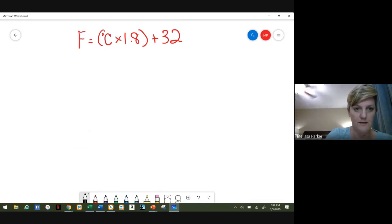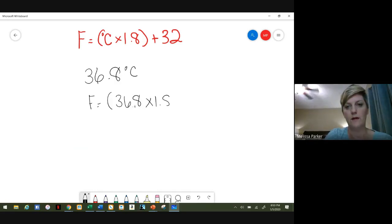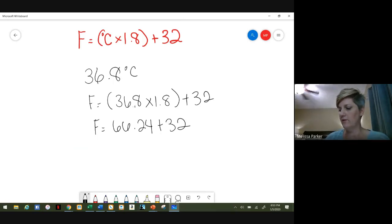So number three is 36.8 degrees Celsius. We're going to go ahead and plug that in here: 36.8 times 1.8 plus 32. So 36.8 times 1.8 is 66.24 plus 32. If you do that, you get 98.24. Again, we're going to round to the nearest tenth, so we would have 98.2 degrees Fahrenheit.